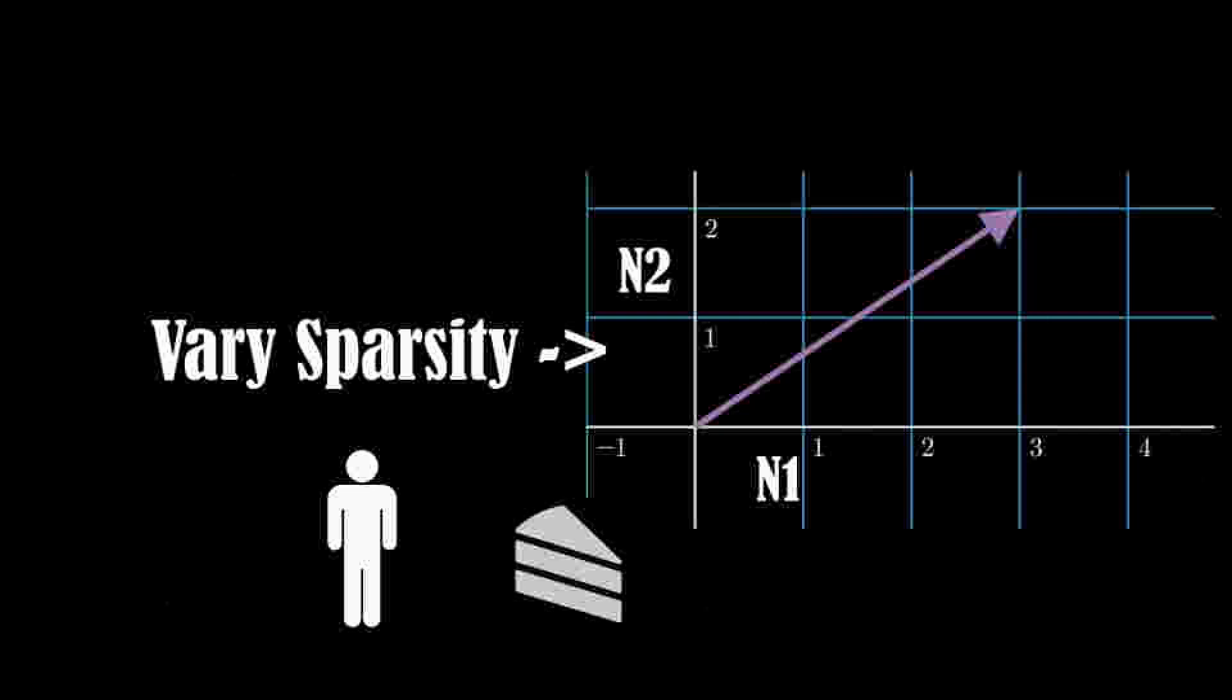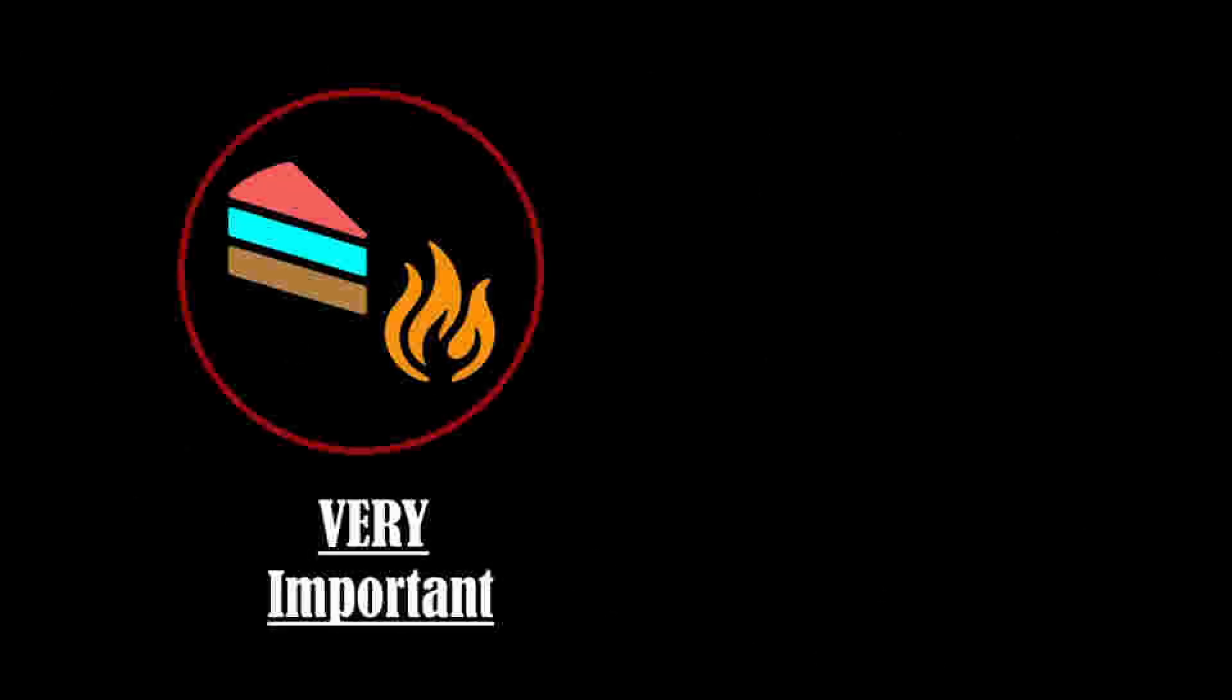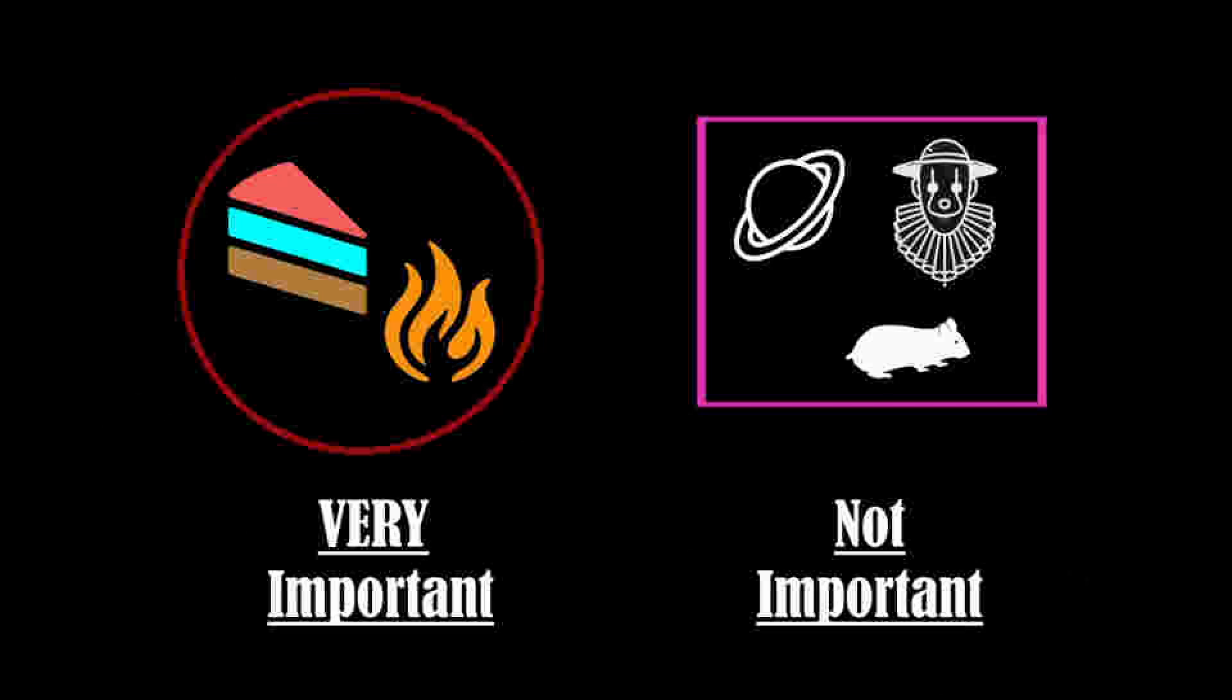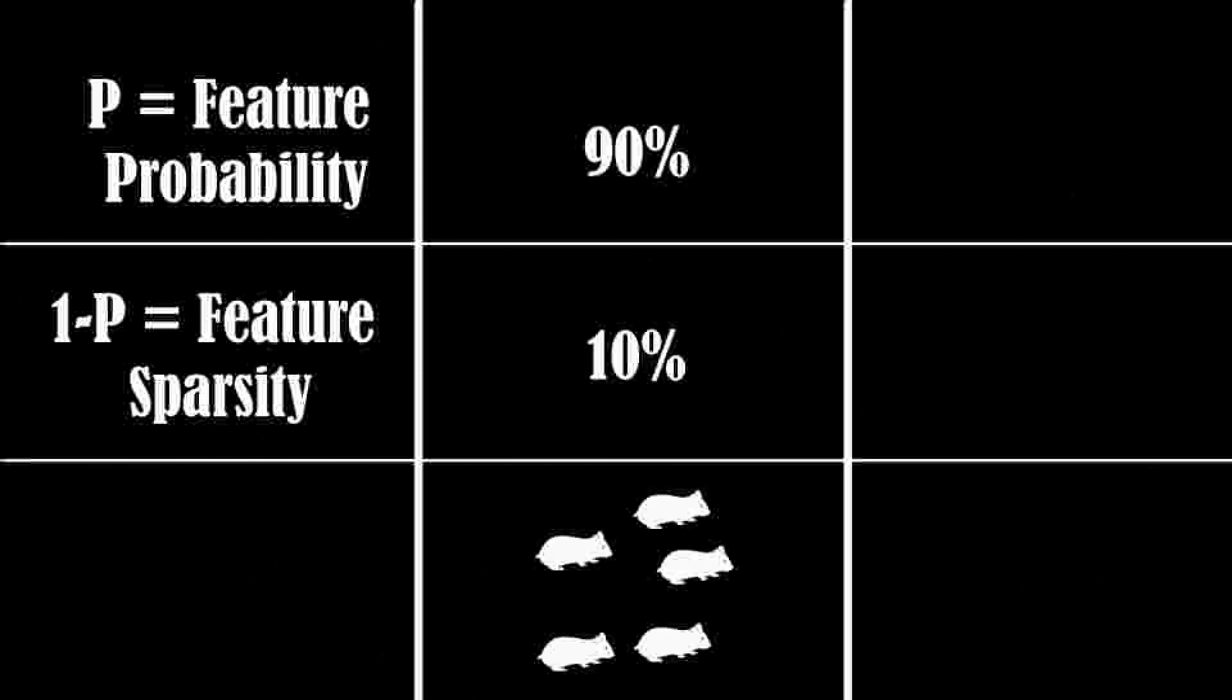Let us look at an example where we observe how varying sparsity changes how the model learns to geometrically arrange features to achieve high rewards. Consider five features, two of which are very important and three of which are less important. For each feature, let p be the probability that an input will contain that feature. We use one minus p to define a feature's sparsity. Features with low sparsity will frequently appear in many inputs. And features with high sparsity will rarely appear.